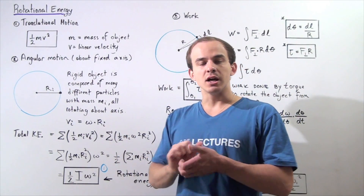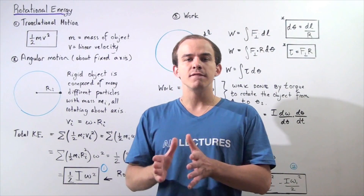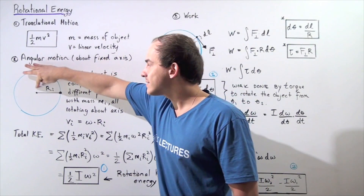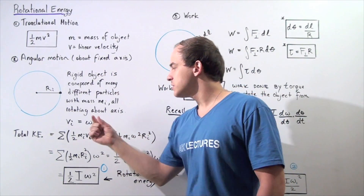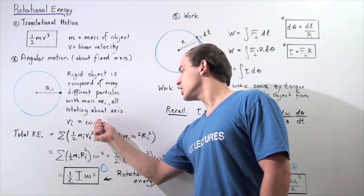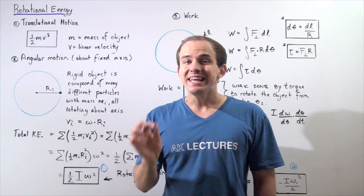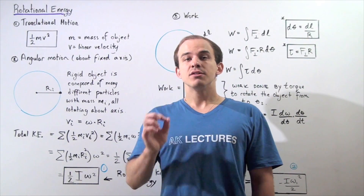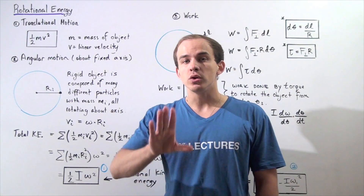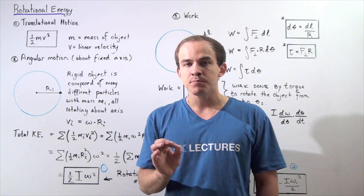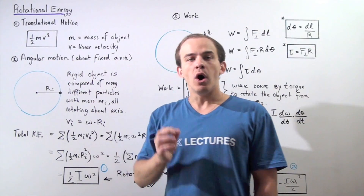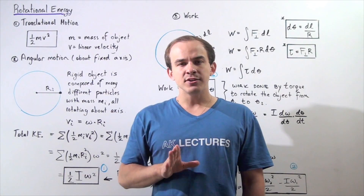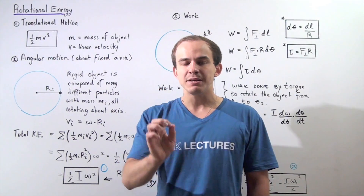If we take the product of the angular velocity of our particle and the distance from that particle to our axis of rotation — omega multiplied by ri — that gives us the linear velocity of that particle. To calculate the kinetic energy of that individual tiny particle with mass mi, we simply use the formula one-half mi vi squared.